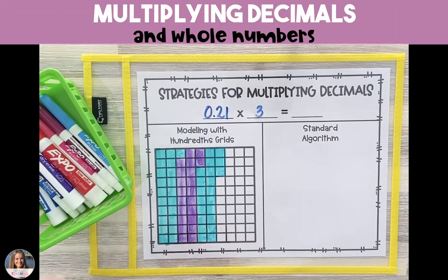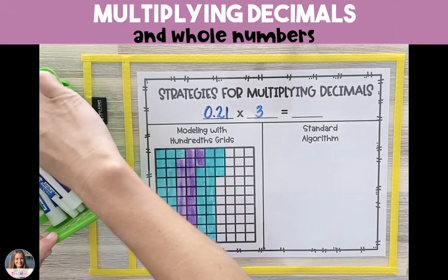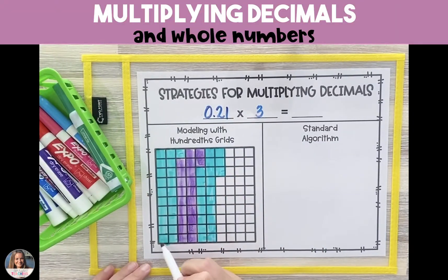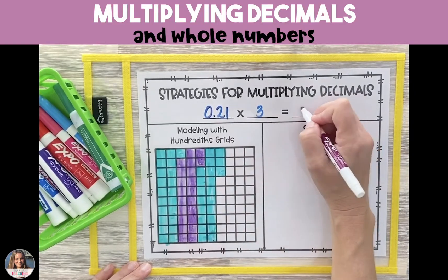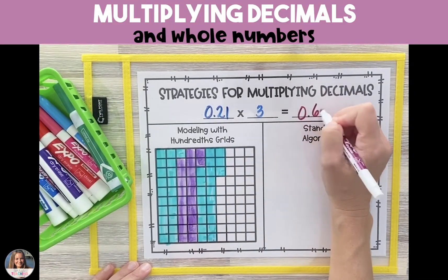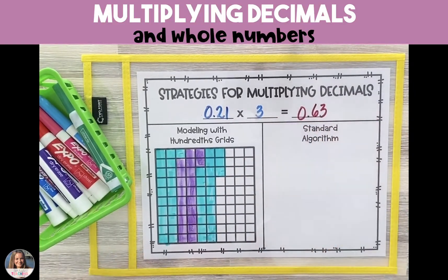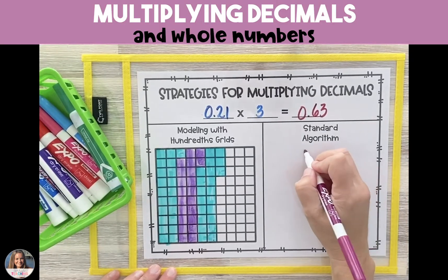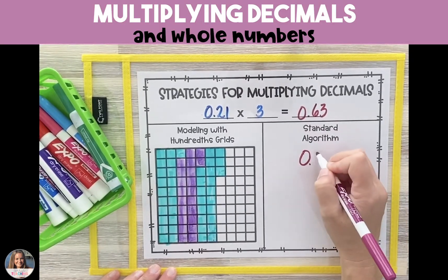Once we have our three groups, we're going to count up all of our squares to find the product, which is 63 hundredths. For the standard algorithm, we're going to line up our multiplication problem just like we would with whole numbers.